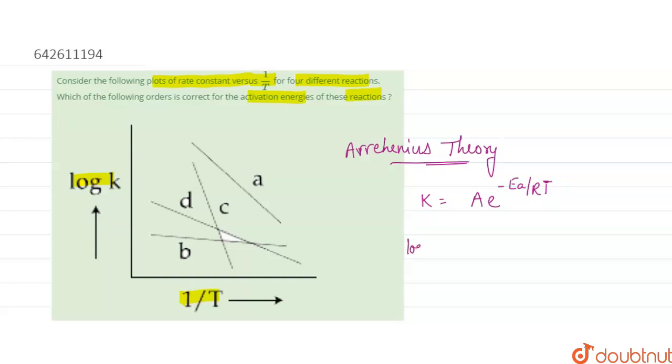When we take the log on both sides, the equation becomes log k equals log A minus Ea upon 2.303 RT.